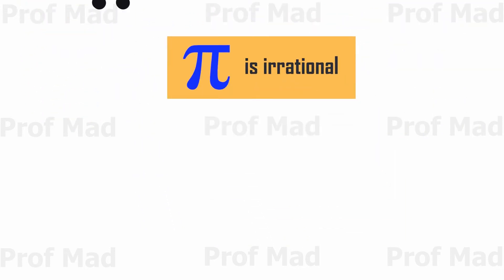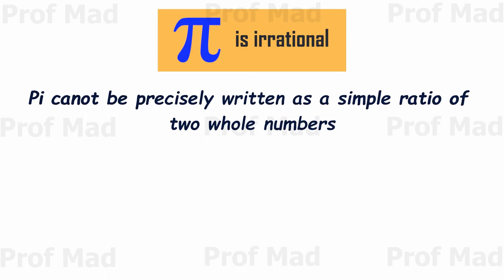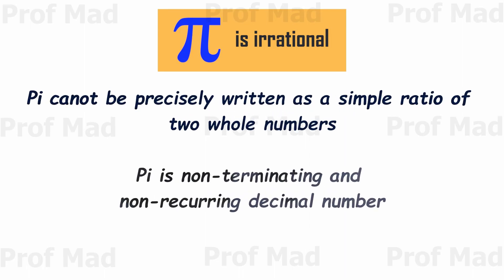That means, unlike rational numbers, pi cannot be expressed precisely as a finite fraction or terminating decimal. Its decimal representation extends infinitely without repeating patterns, making it an irrational number. But there are many rational approximations to the value of pi.